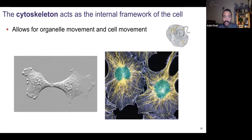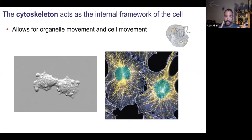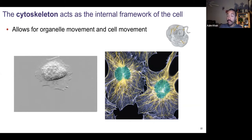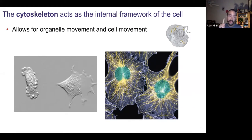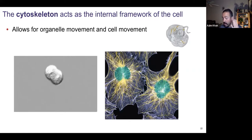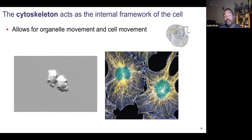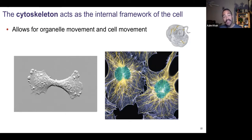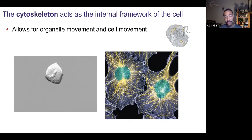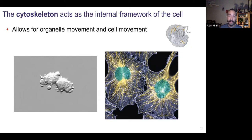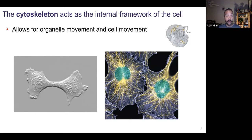Many of the organelles we discussed — rough endoplasmic reticulum, smooth endoplasmic reticulum, Golgi complex, lysosomes, mitochondria — all have membranes made of phospholipids forming their outer surface. Some structures like ribosomes are not made of membranes. This next cell structure also is not made of membranes or lipids as its primary molecule. This structure is known as the cytoskeleton.